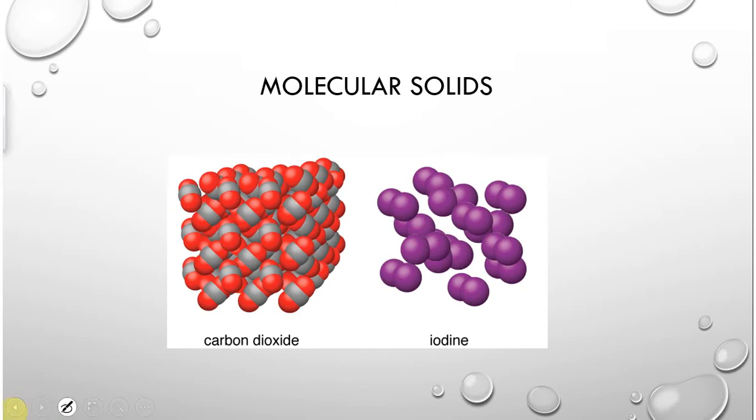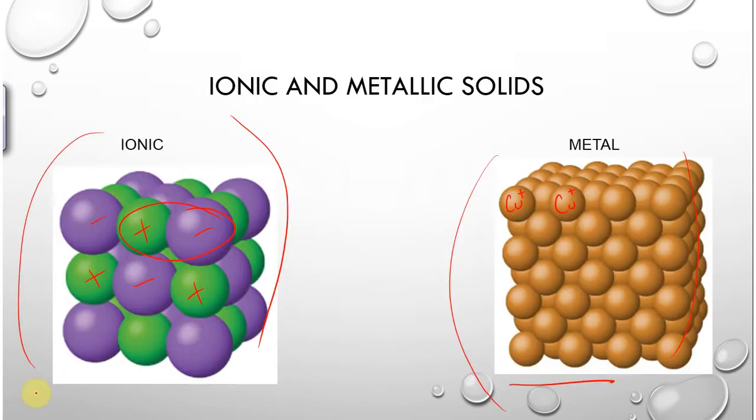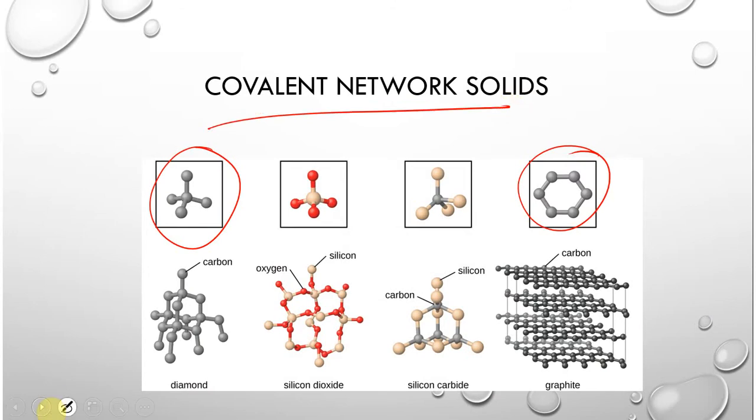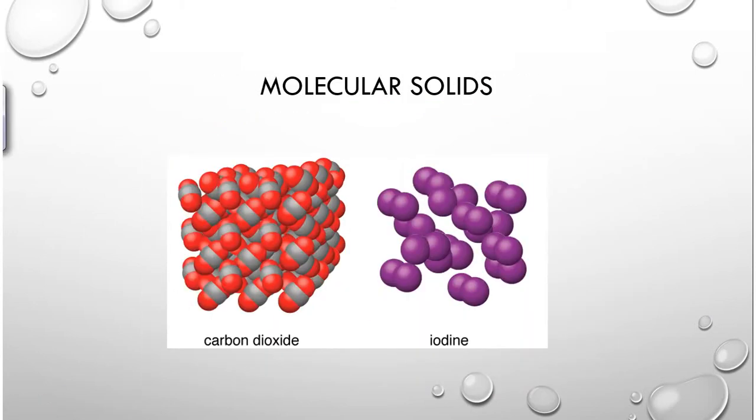So ionic metallic solids, covalent network solids, now we're going to molecular solids. Carbon dioxide, those molecules sitting next to each other, not bonded to one another like a network, but sitting next to each other, make molecular solids. This is just dry ice. And so those molecules will sit next to each other and interact pretty weakly, which is why dry ice will sublime right in front of you.